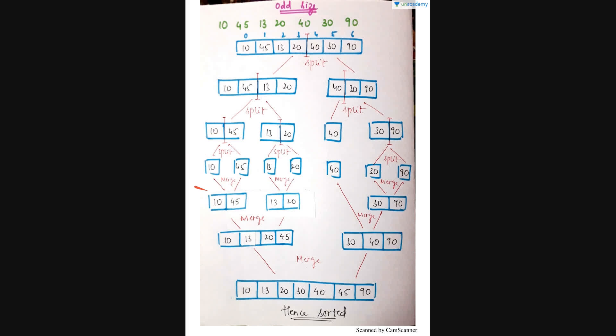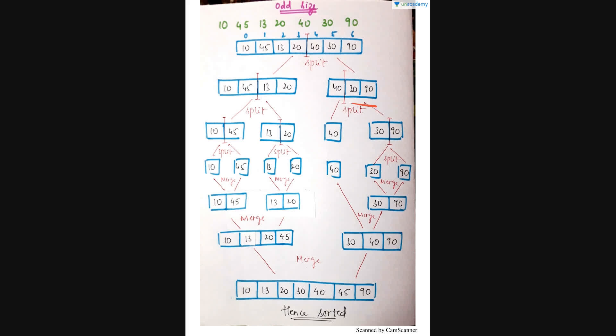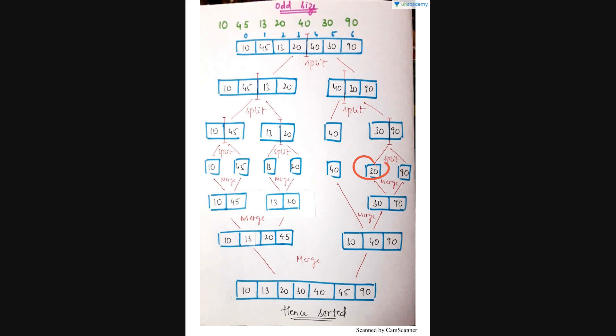Now we move to the three-element part: 40, 30, 90. Three divided by two is 1.5, so we split here — 40 becomes one separate element, and 30 and 90 form a pair. Since 30 and 90 are two elements (even size), they split further into one and one — 30 and 90 are each separate. The splitting phase is now complete.